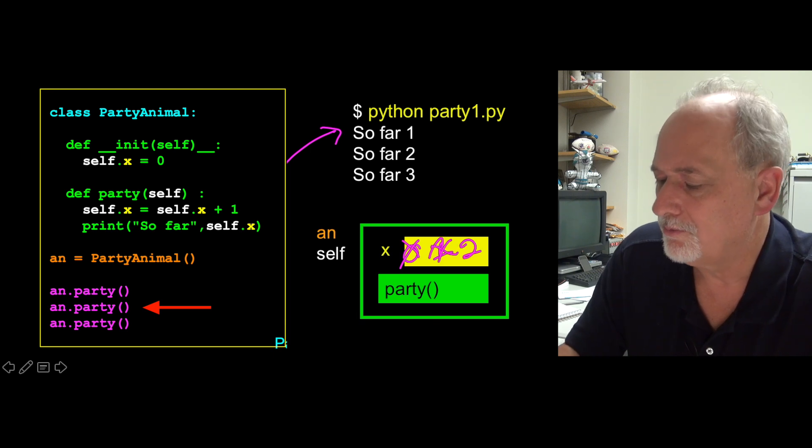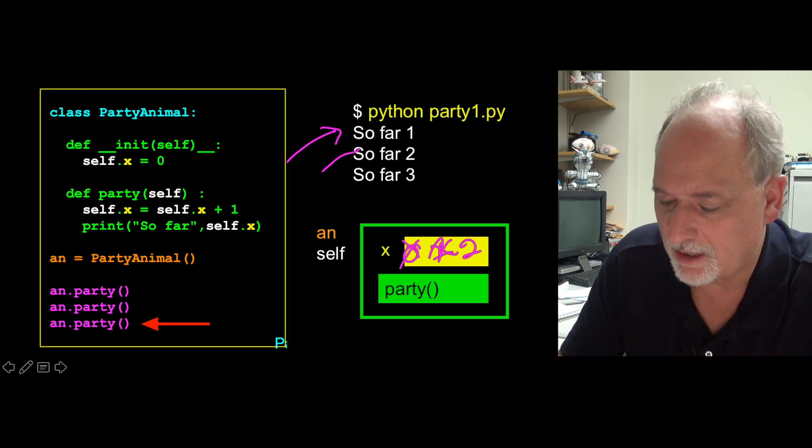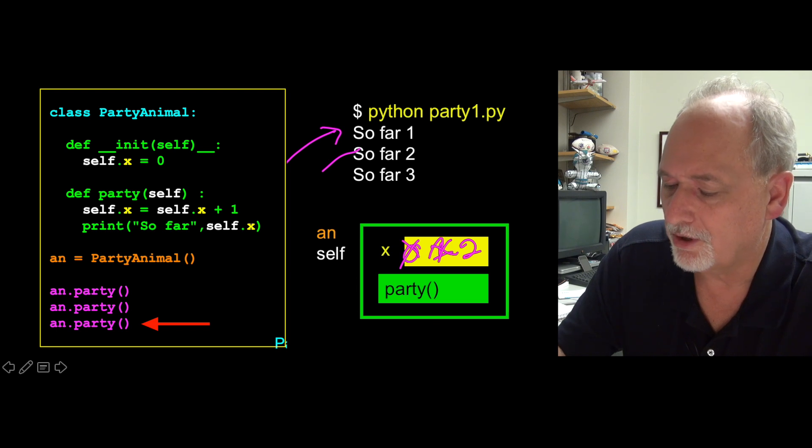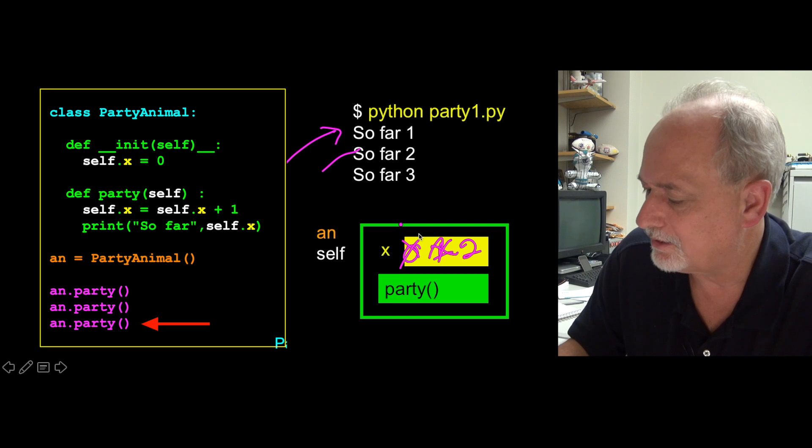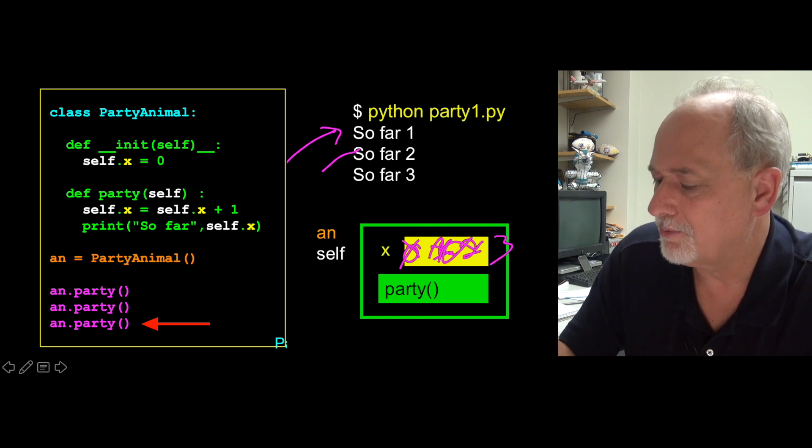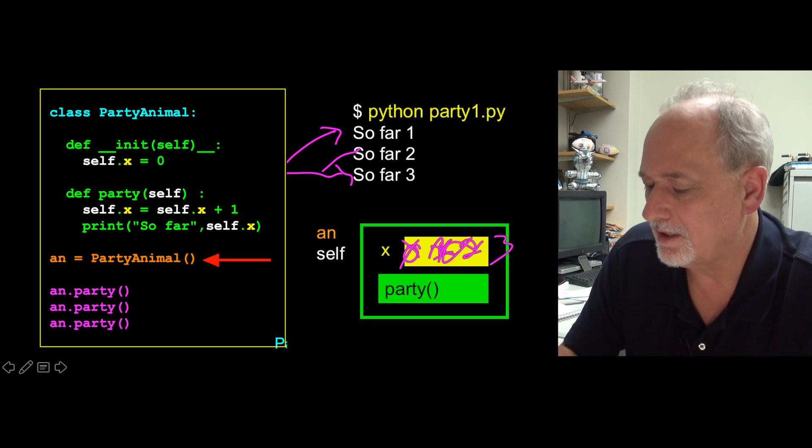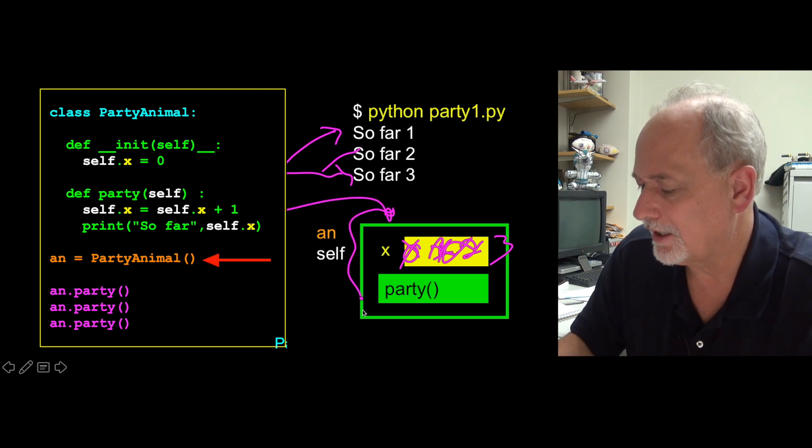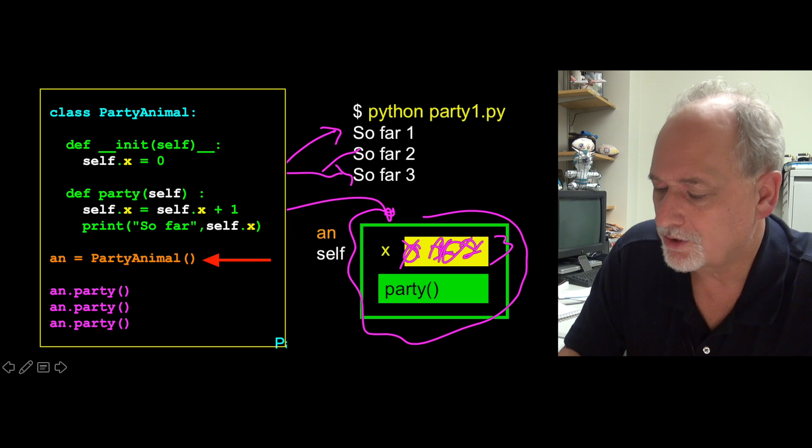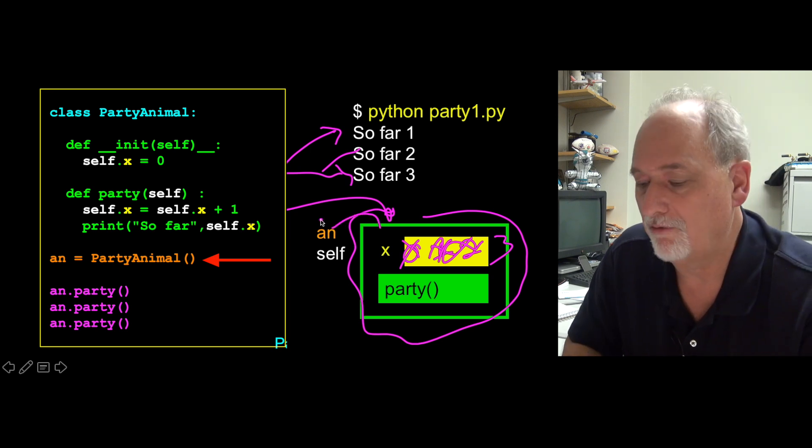And x becomes two. Prints out so far two. Comes back down and does the last time. Calls it again. Self.x is two. Add one to it and stick it back in. So this becomes three. And we print out three. And then the program finishes. And so you can think of this as constructing the object and then associating it with this an variable.